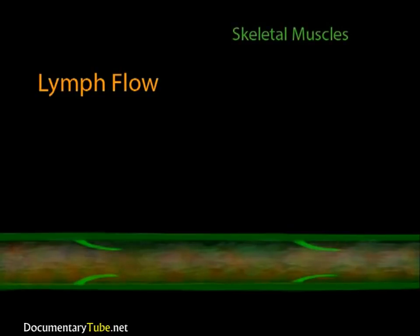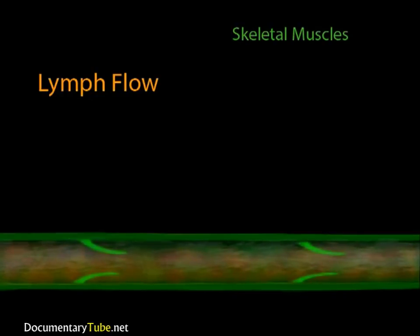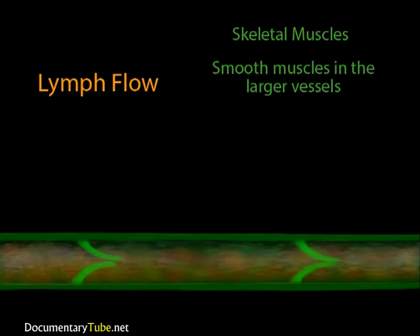The lymph moves through your body when you move your skeletal muscles. The contraction of skeletal muscles squeezes the nearby lymph vessels, pumping them and pushing lymph through the vessels. In addition to skeletal muscle contraction, there are smooth muscles at the larger lymph vessels whose contraction adds to the force provided by the skeletal muscles.